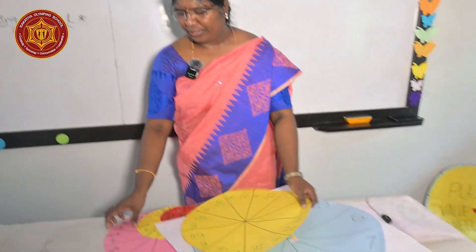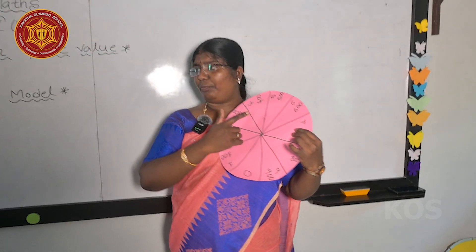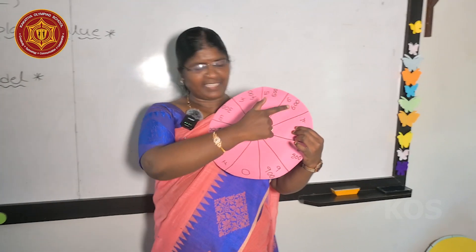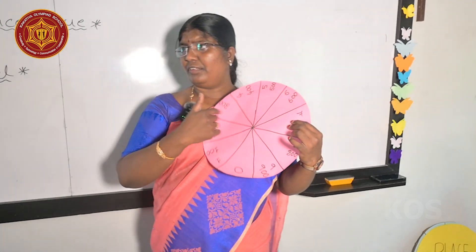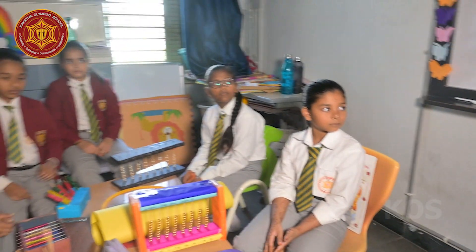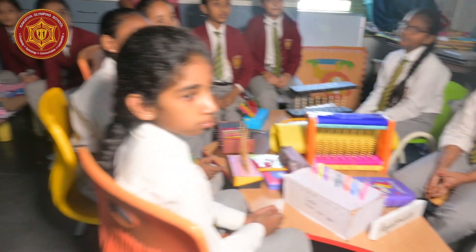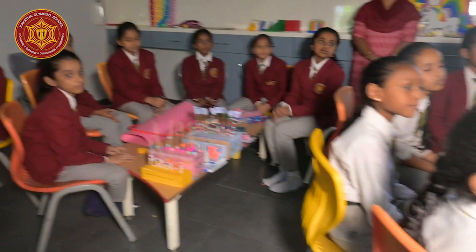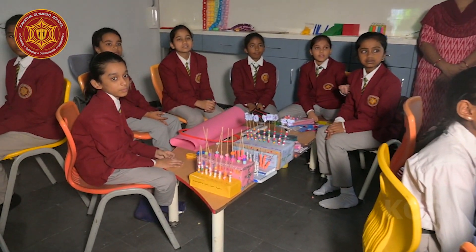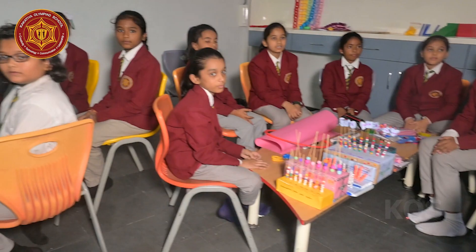After cutting, you have to make these lines: 0, 1, 2, 3, 4 — 0 to 9 for the ones place. For the tens place, you should mention it as 0, 10, 20, 30 like that, up to 90.